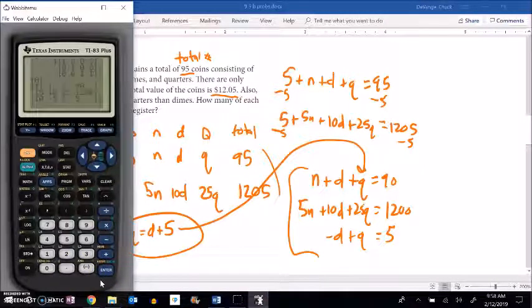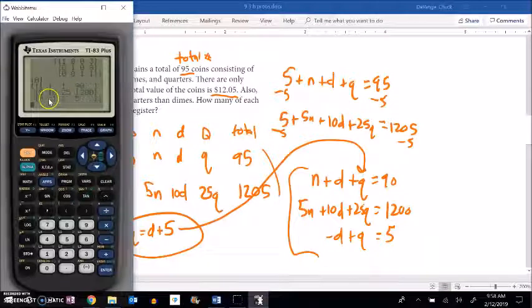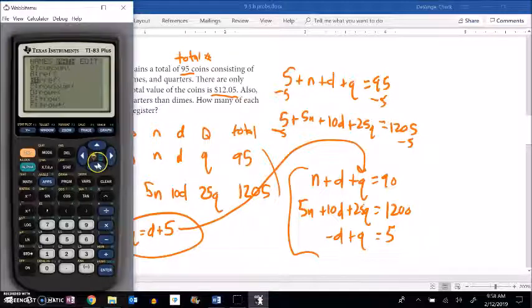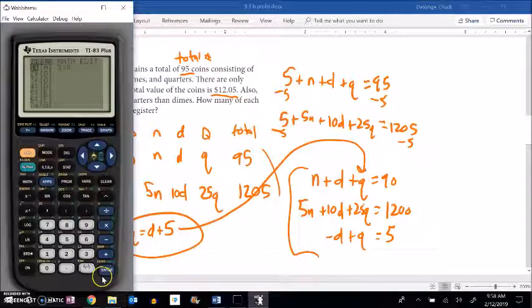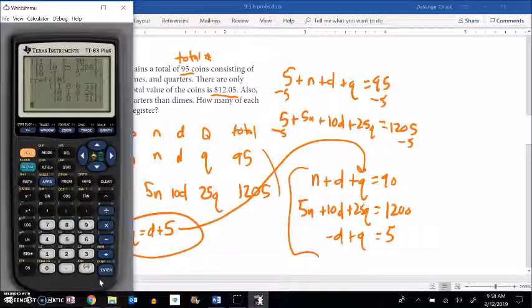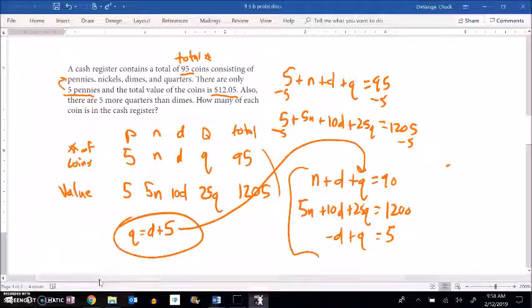Again, I always like to check, make sure I entered what I was thinking I was entering. Looks like I did. So let me reduce row echelon form this thing. It looks like there are 33 nickels, 26 dimes, 31 quarters.